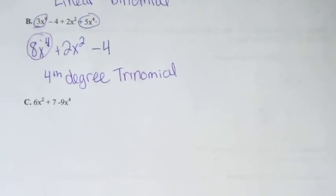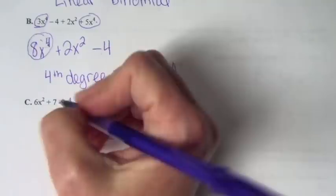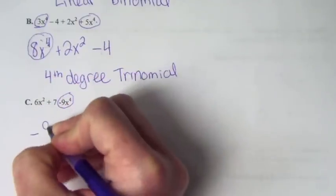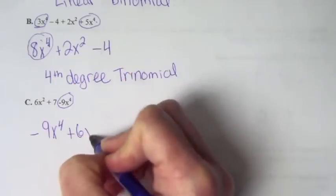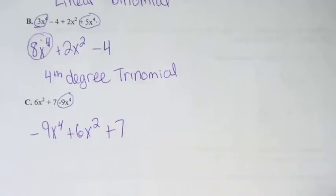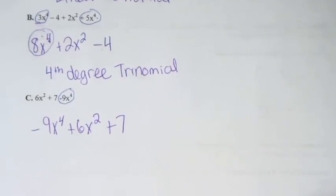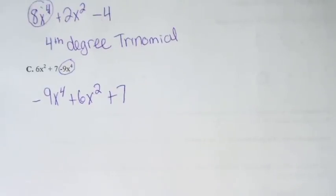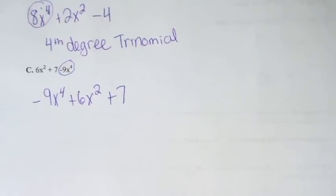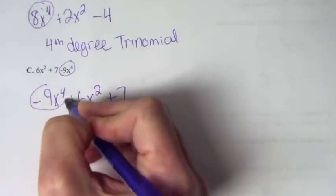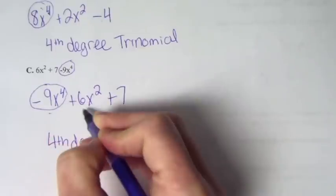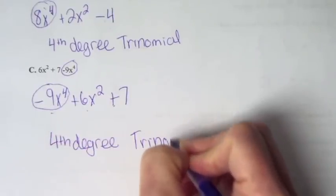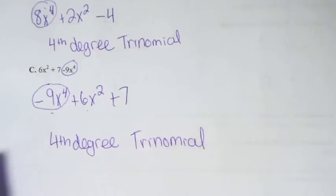Letter C: we have 6x squared plus 7 minus 9x to the 4th. Negative 9x to the 4th comes first, so we write negative 9x to the 4th plus 6x squared plus 7. The degree of the polynomial is the degree of the greatest monomial — negative 9x to the 4th has the biggest degree, so this is a fourth degree. It has three terms, so it's a trinomial.